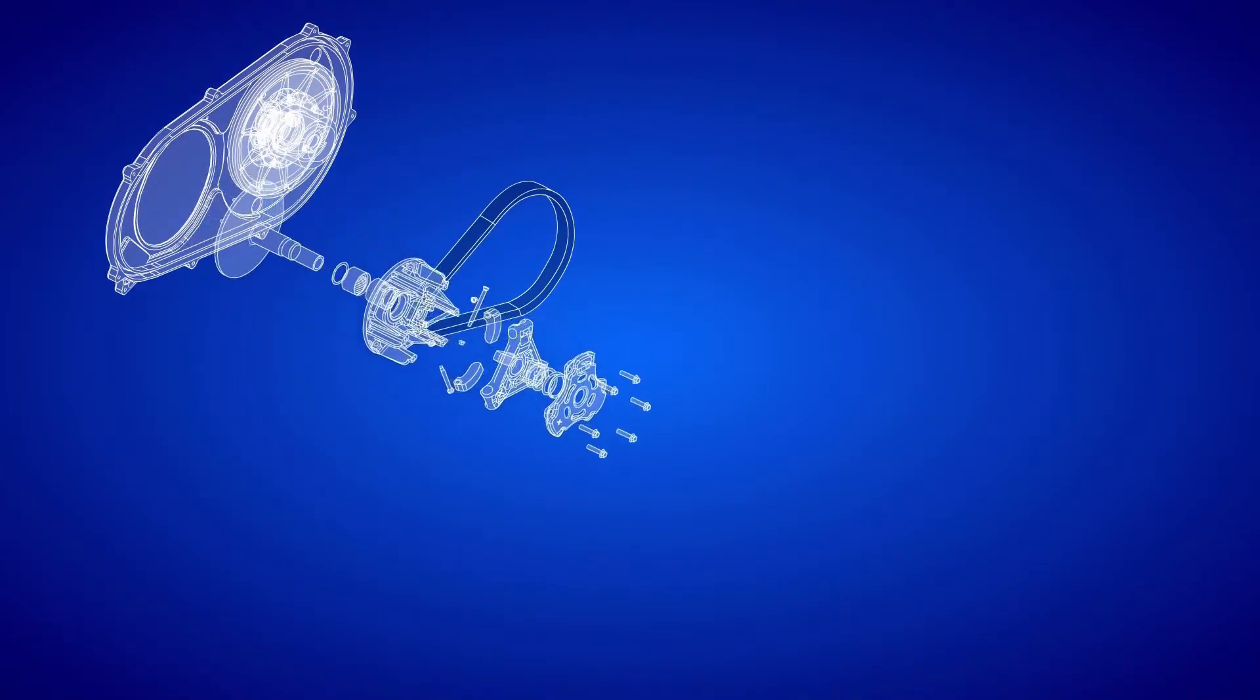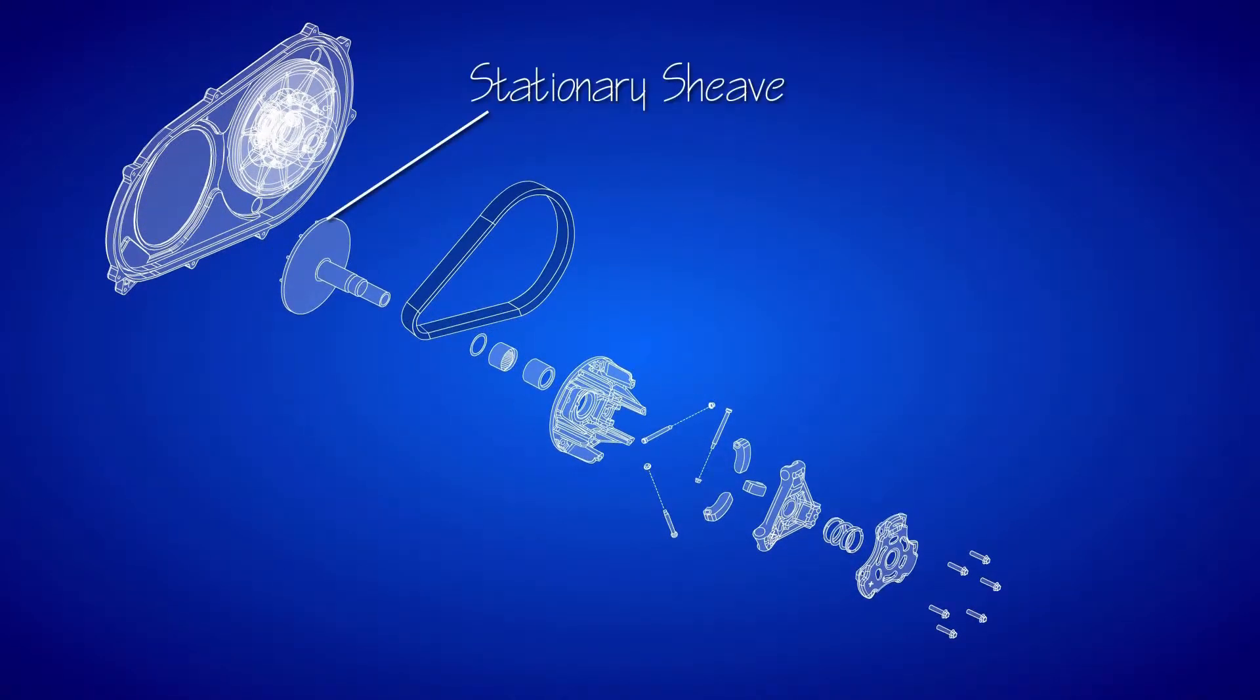The drive clutch has two sheaves: a stationary sheave, which is connected to the engine crankshaft, and a movable sheave, which moves in and out to adjust the belt.